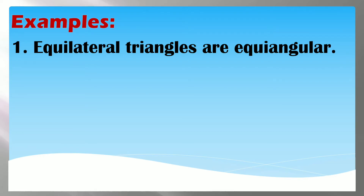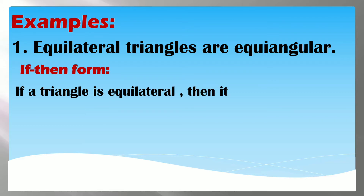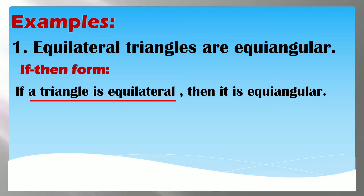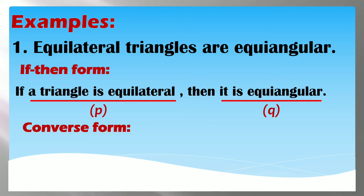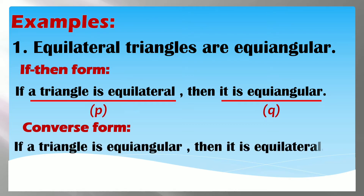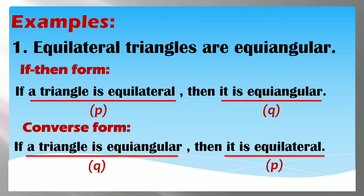Examples: number one, 'Equilateral triangles are equiangular.' So ang if-then form niya ay: if a triangle is equilateral, then it is equiangular. Ang ating hypothesis sa statement na ito ay 'a triangle is equilateral' at ang ating conclusion ay 'it is equiangular.' So pagpapalitin lang natin — dapat mauna si conclusion and then sunod si hypothesis. So ang converse form: if a triangle is equiangular, then it is equilateral. Ang conclusion nauna, followed by our hypothesis — pinagpalit lang po yung pwesto ng ating dalawang statement.